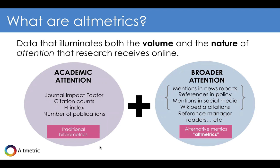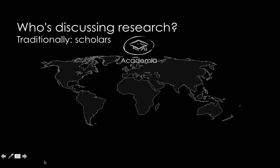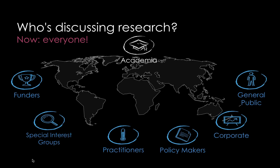Altmetrics are a great complement to traditional citations, because they can tell you of influence beyond the academy. If we think about who talks about research — traditionally it was scholars at conferences, in journals, within their departments — but now there's a much broader audience interacting with research online. The question has become: how can we find out who's talking about our research and what they're saying? Altmetrics provide that solution. With new technology, we can now see where research is being discussed by practitioners, special interest groups such as patient groups, and even public policy makers or corporations who might be interested in using your data or articles in something they're developing.